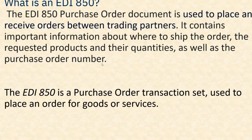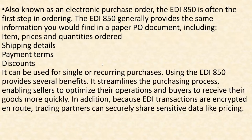The EDI 850 is a purchase order transaction set used to place an order for goods or services. It is also known as an electronic purchase order, and the EDI 850 is often the first step in ordering. It generally provides the same information found in a paper PO document, including item details, prices, quantities, shipping details, payment terms, and discounts.